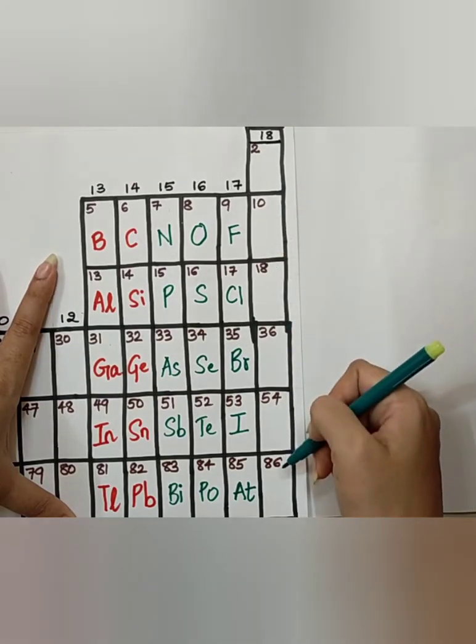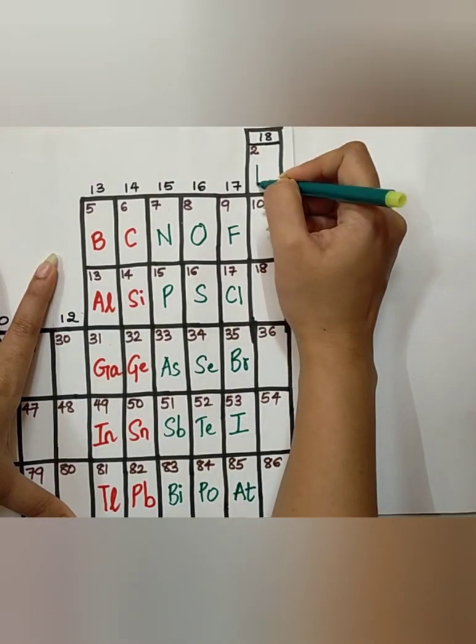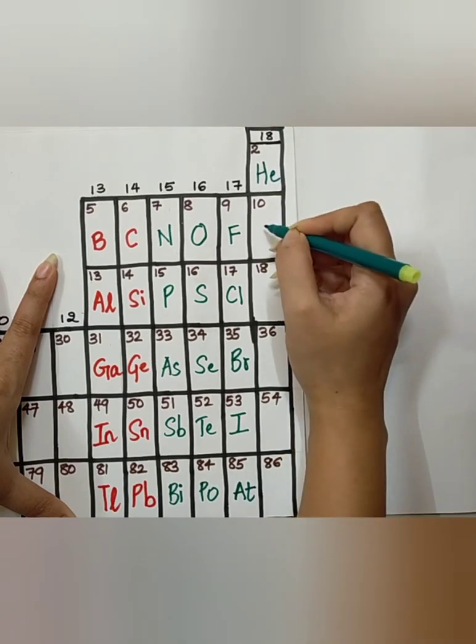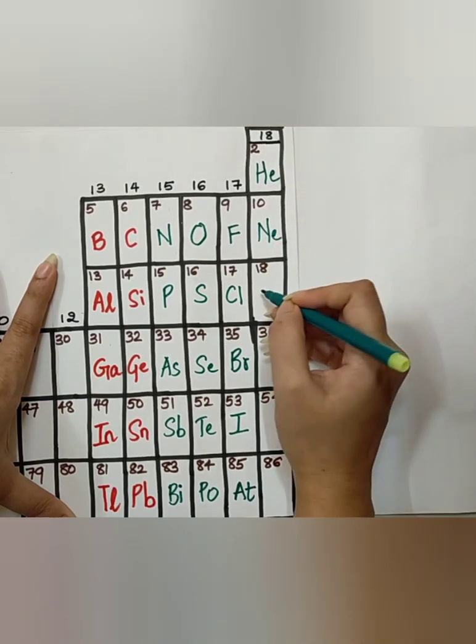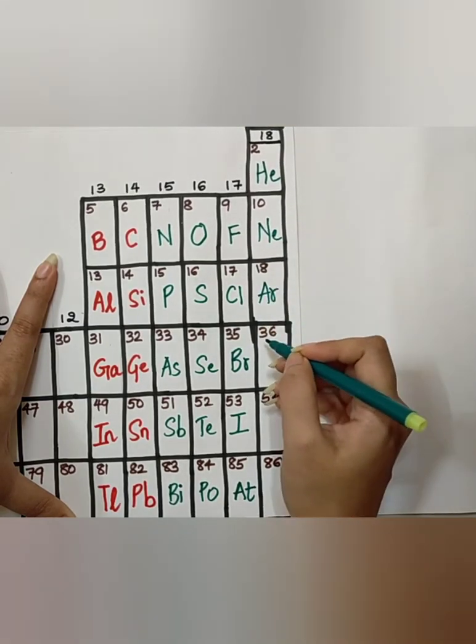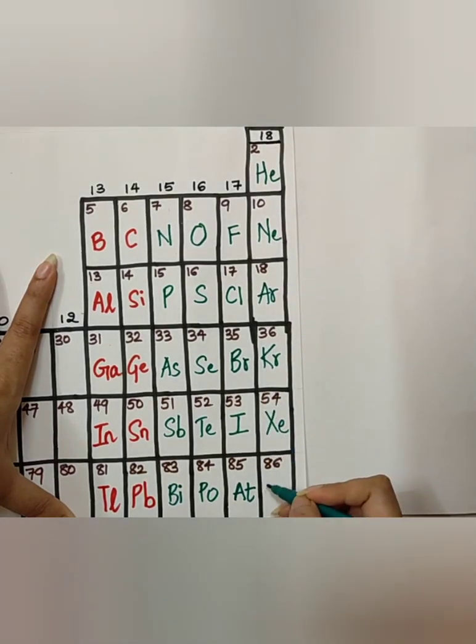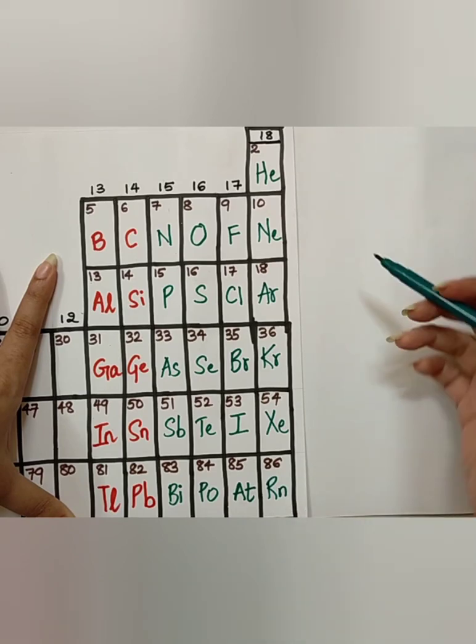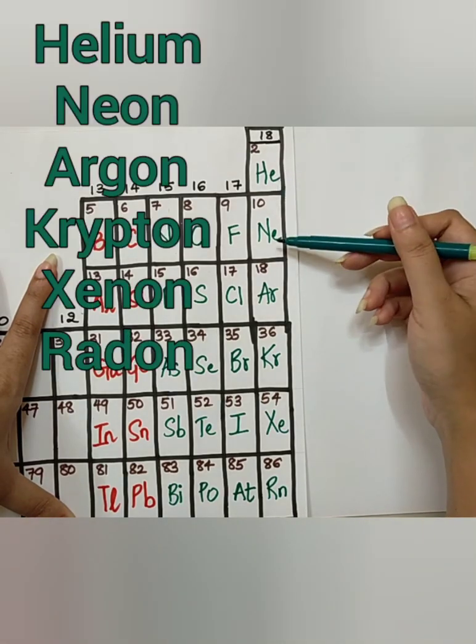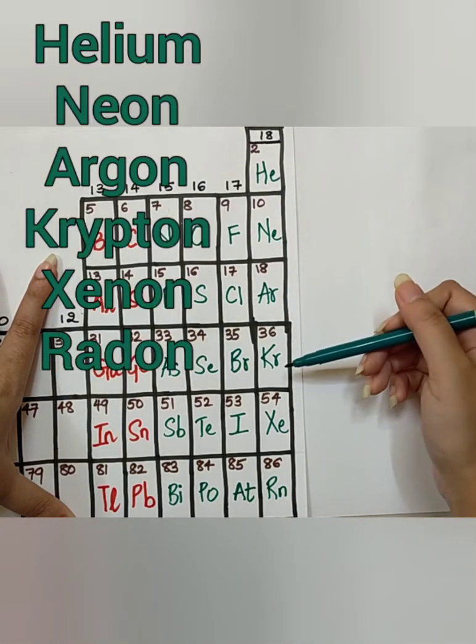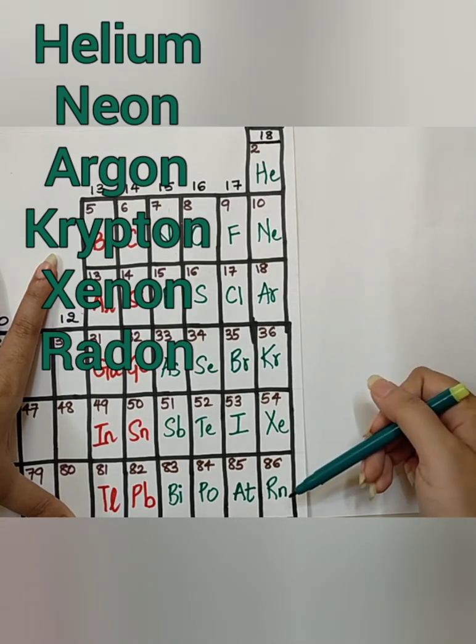Moving on to the 18th group. Hello, Neha, Ar, Karan, and Xenia, Running in the Marathon. Helium, Neon, Argon, Krypton, Xenon, Radon.